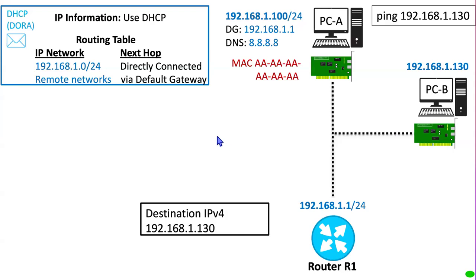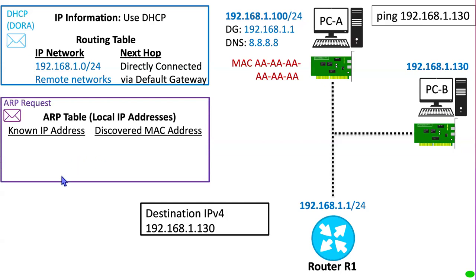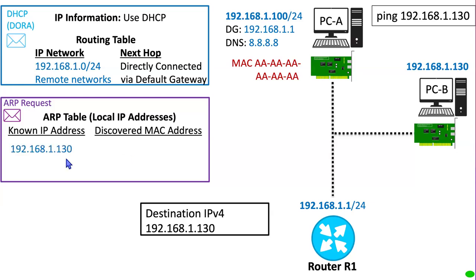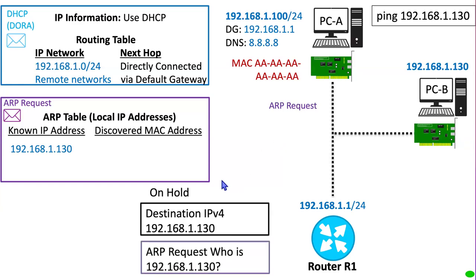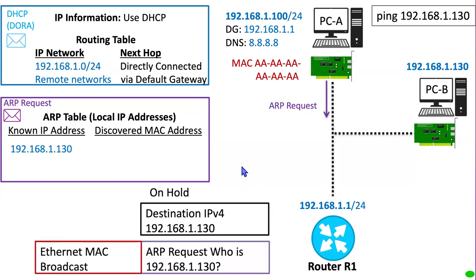Where does it look for that information? It looks in its local ARP table — Address Resolution Protocol table. This is a table that contains known IPv4 addresses on its local network and the associated MAC address. In this case we know the IP address but not the MAC address. So this packet has to be put on hold, and PCA sends out an ARP request — a message that says 'who out there is 192.168.1.130? I need your MAC address.' This is sent out as an Ethernet broadcast, meaning the destination MAC address is a broadcast, so every NIC card on this LAN will look at this ARP request.